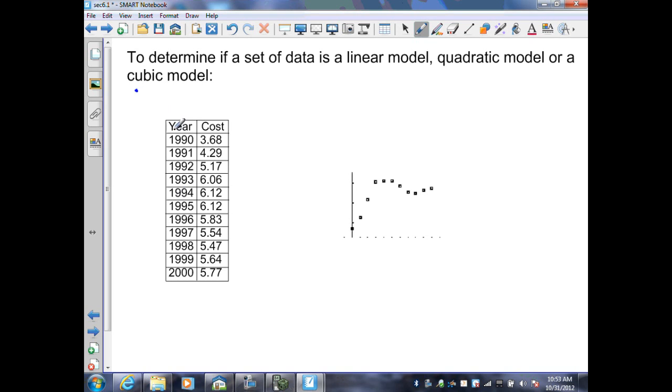In this set of data, I'm given years and cost of an item. The years when I plug it into the calculator, which I'll represent later, I can have x represent zero for 1990, 1 represent 1991, 2 represent 1992, and 10 can represent the year 2000.